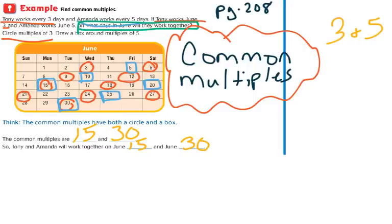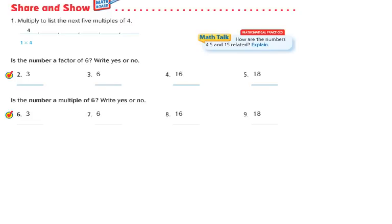Look further down on your page for the Sharon Show — pause the video and take a minute to fill this out. Number 1 says: multiply to list the next five multiples of 4. We're skip counting by 4: 4, 8, 12, 16, 20, and 24.